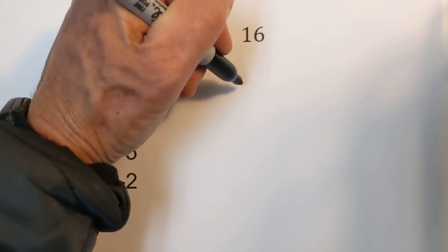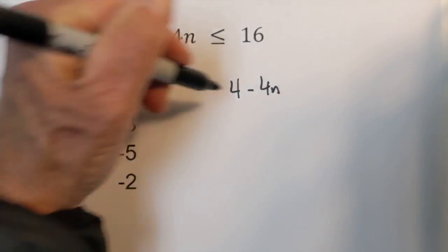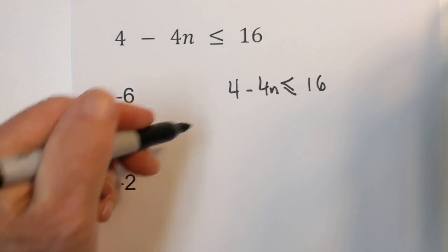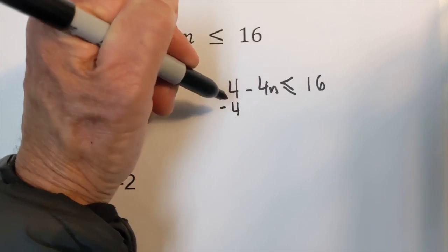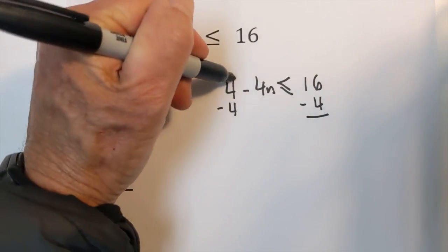Okay let's begin. I probably should have had this written ahead of time but I didn't. Okay we have 4 minus 4n is less than or equal to 16. Let's begin by getting rid of the 4 by subtracting 4 from both sides. These cancel.